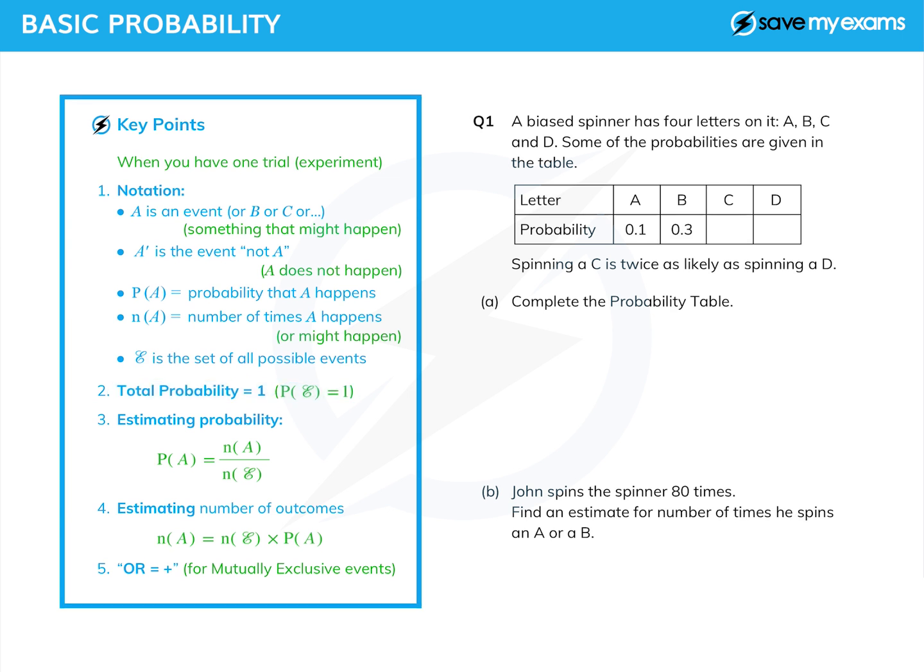If we want to estimate probability from an experiment, we can say that the probability of A is approximately equal to the number of times that A has happened over the number of times that anything happened. And we'll come to that in question 2.